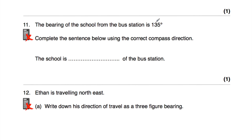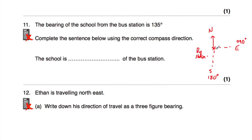Question number eleven: the bearing of a school from the bus station is 135 degrees. Bearings are measured clockwise from north. Rotating 90 degrees from north gives east at 090. Rotating another 90 gives south at 180. We want 135 degrees, which is exactly in the middle of 090 and 180 — that's 45 degrees past east — so that direction is southeast. The school is southeast of the bus station.